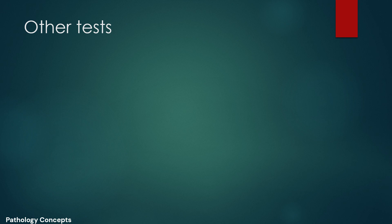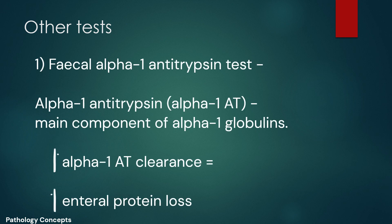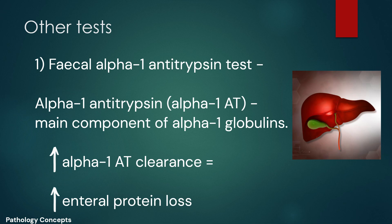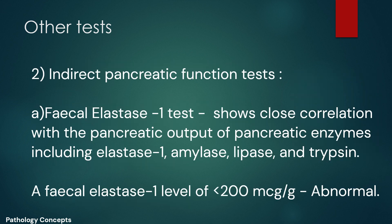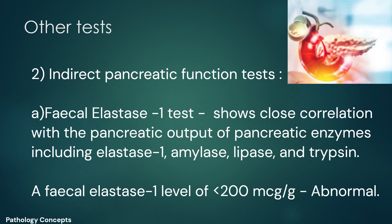Now let's learn about other tests. The first is the fecal alpha-1 antitrypsin test. Alpha-1 antitrypsin is a glycoprotein synthesized in the liver and is the main component of alpha-1 globulins. An increase in alpha-1 antitrypsin clearance suggests that enteral protein loss is increased.